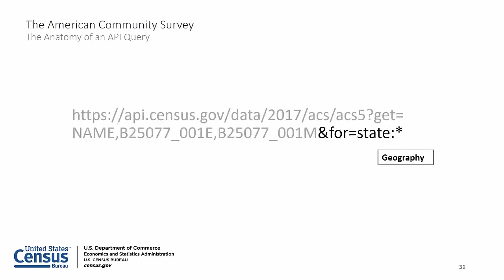For geography, we want all states as we had in our table, so we use an asterisk at the end of 'state'. The asterisk is a wildcard — it means we want all results for that particular level of geography. So we want all of the states within the geography level 'state'.